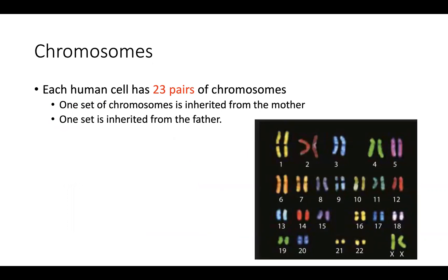For the human, each somatic cell is going to have 23 pairs of chromosomes, giving us 46 total chromosomes. Those 23 pairs are a result of inheriting one set of chromosomes from your mom and one set from dad. Each of those chromosomes contains very important instructions for us to exist.